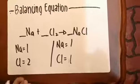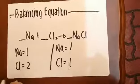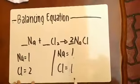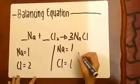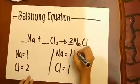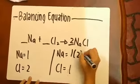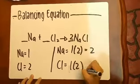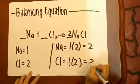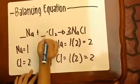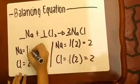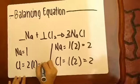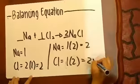As you can see, both of them are not equal. Therefore, we have to add 2 in the product of sodium for it to be equal, and add 2 to chlorine as well, and 1 to the chlorine to be equal.